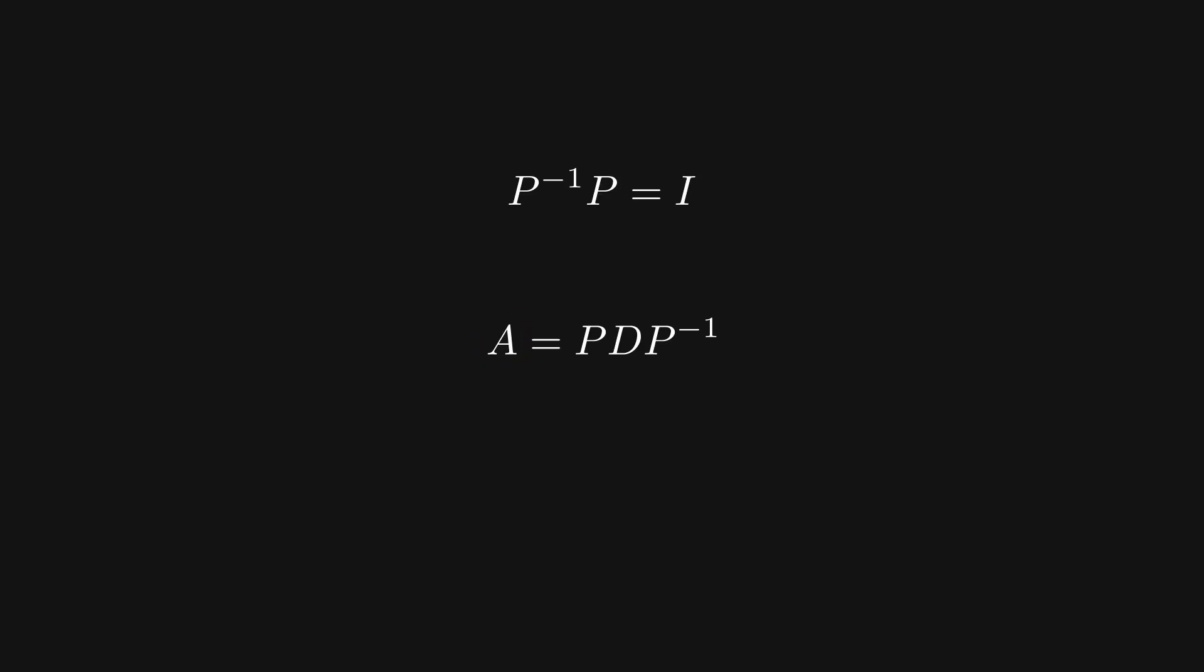This works because our starting matrix A and our diagonal matrix D are related by a special change of basis matrix P, and when we take our equation to a large exponent, all of the P and P inverses in the middle cancel out, leaving us only with an equation that takes our diagonal matrix D to a large power.